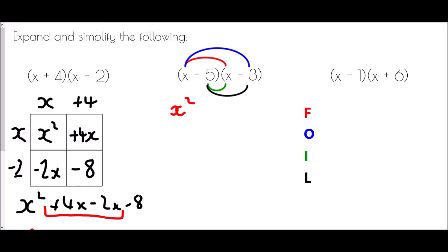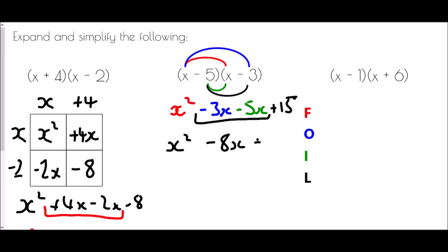For the claw method: x times x is x squared, then x multiplied by negative three is negative three x, then negative five times x is negative five x, and negative five times negative three is plus fifteen. When we simplify the middle: x squared, then negative three x minus five x — this is not a double negative situation, it's negative three take away another five — so we get negative eight x plus fifteen.